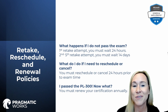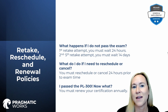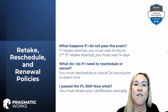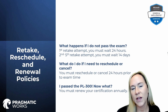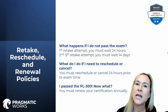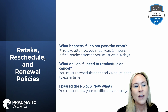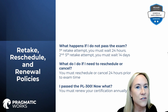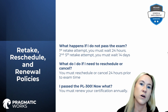Let's discuss the retake, reschedule, cancellation, and renewal policies. If you don't pass on your first try, don't worry — you only have to wait 24 hours before your second attempt. If you fail a second time, you'll need to wait 14 days for each subsequent attempt up to the fifth. After five failed attempts, you'll have to wait a full 12 months from the date of your first exam attempt before trying again.